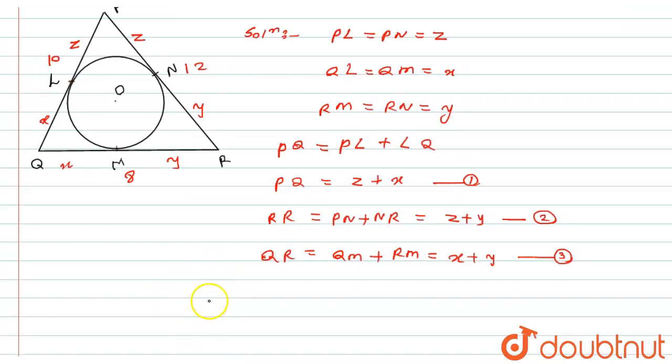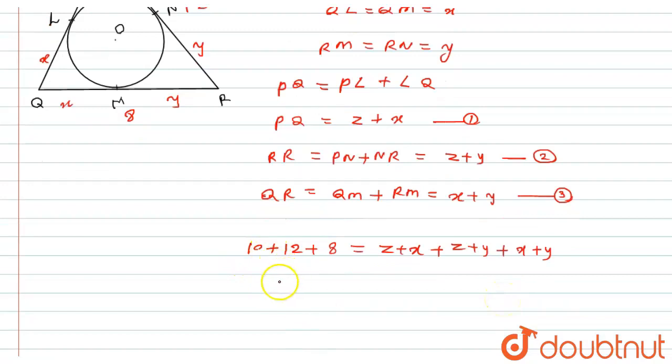Now I will add all the 3 equations. So PQ length is given to us 10 cm plus PR 12 cm and QR 8 cm will be equals to Z plus X plus Z plus Y plus X plus Y. Now if I will look here, so 2Z, 2X, 2Y. So I will common the 2 and here it will be remaining X plus Y plus Z equals, the addition of this will be 30. Now if I will take 2 to the other side, it will give me X plus Y plus Z equals 30 divided by 2 which will be equals to 15. So let's, this is equation number 4.